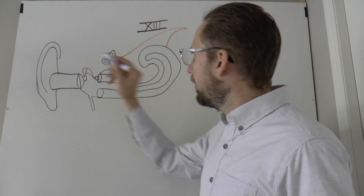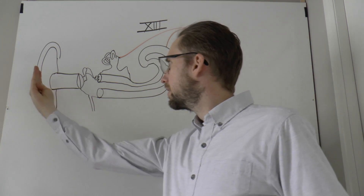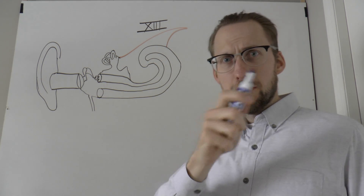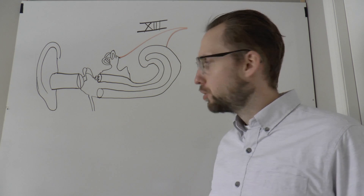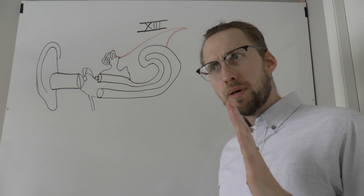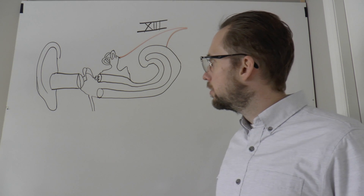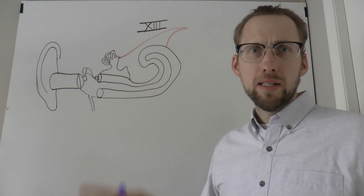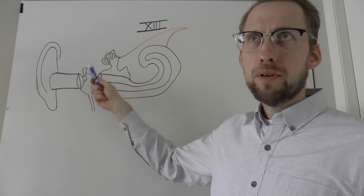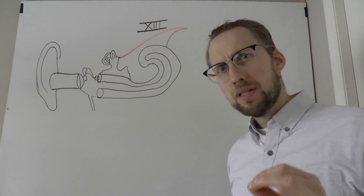Sound comes in and gets channeled through the auditory canal in the ear, then it hits the first structure: the tympanic membrane. The tympanic membrane starts to vibrate. Connected to the tympanic membrane are the three ossicles — drawn completely out of proportion, just giving you an impression — hammer, anvil, ending up in the stirrups.